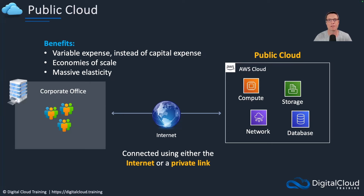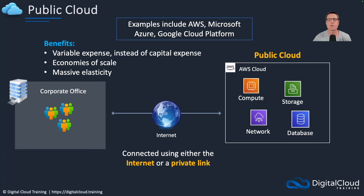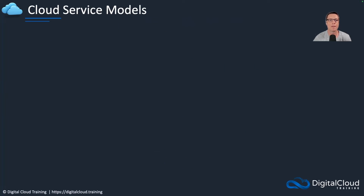And you get massive elasticity. AWS have such a massive amount of compute power that it's very rare they're going to run out — there's usually always some capacity somewhere. Even the biggest companies with the largest requirements don't have an issue scaling in the cloud. Other examples include Microsoft Azure and Google Cloud Platform. AWS is by far the leader in this space, Azure comes in second place, and Google Cloud Platform a little way behind that.